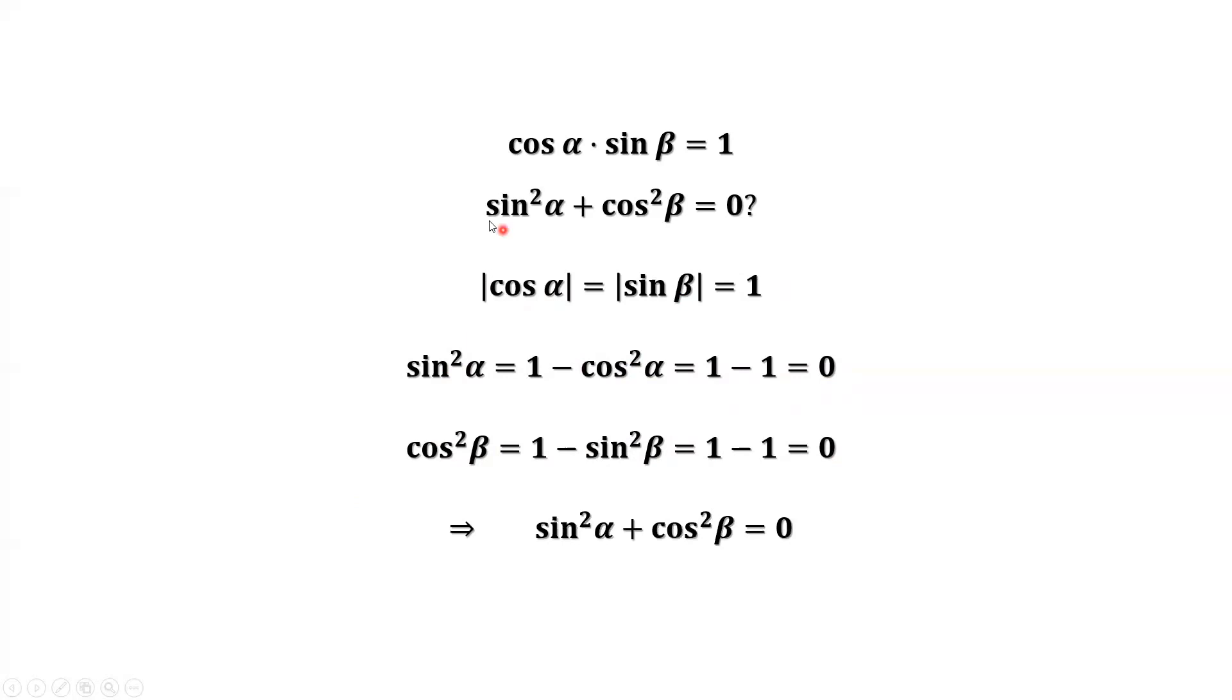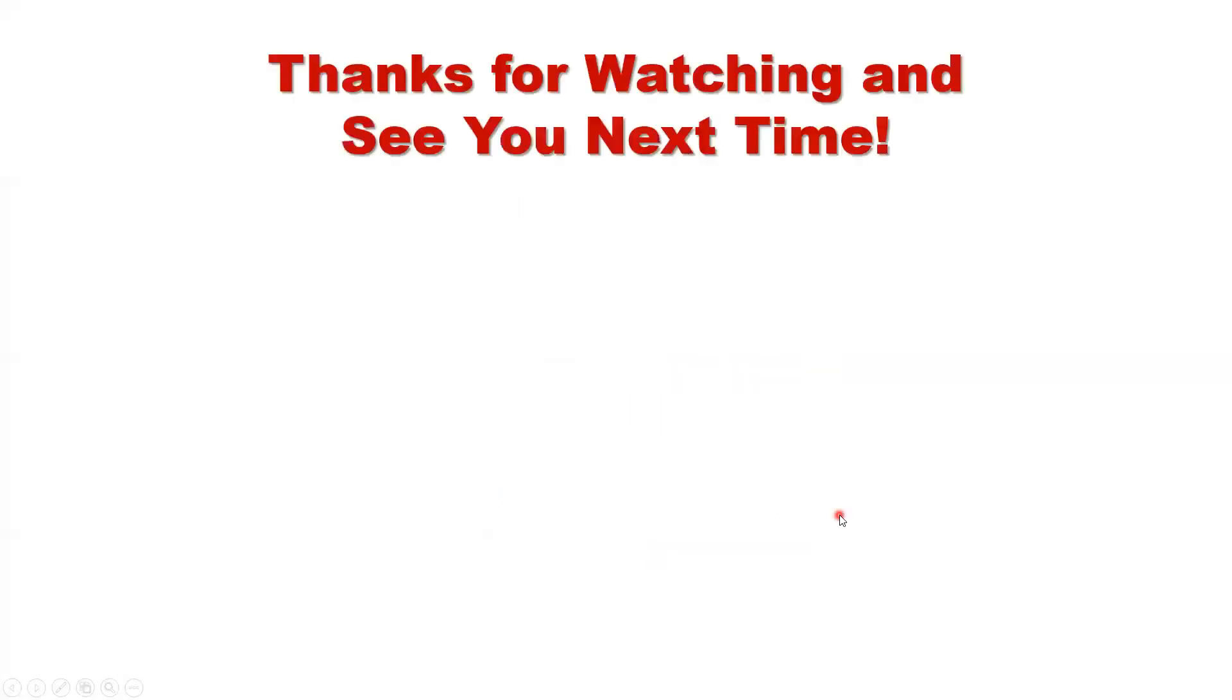So here we have sine squared alpha and cosine squared beta. Both are zeros. Plug in here, we got zero. So this is the answer. Thanks for watching, and I'll see you next time.